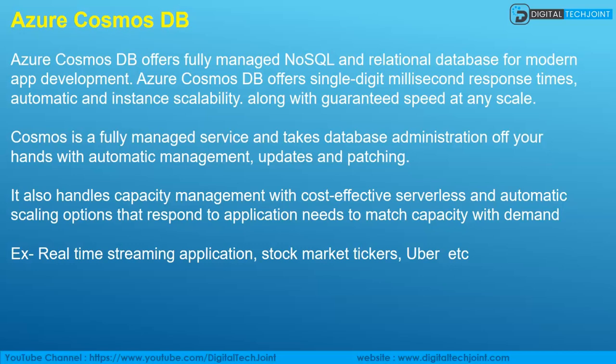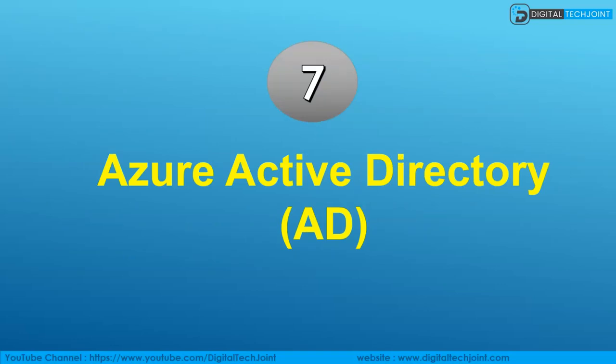If you have a requirement for real-time updates to be given to users, Azure Cosmos DB is the ideal choice. It handles capacity management with cost-effective serverless and automatic scaling options that respond to application needs to match capacity with demand — essentially zero latency. Examples include real-time streaming, stock market records, or apps like Uber where customers see the real-time position of their car. Azure Cosmos DB is the right choice for such real-time intensive applications.